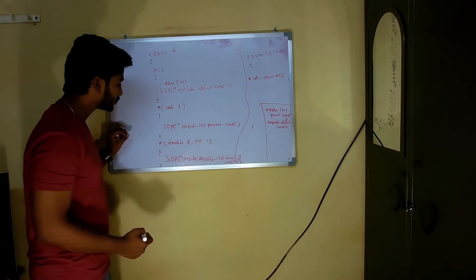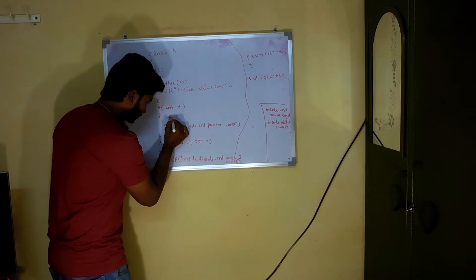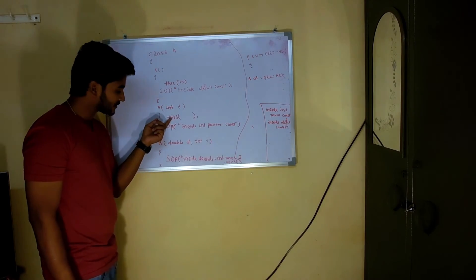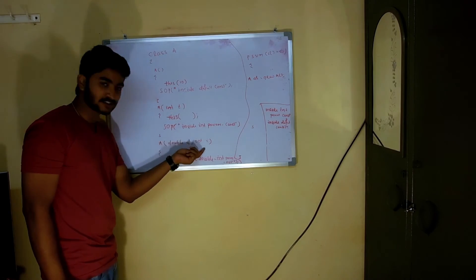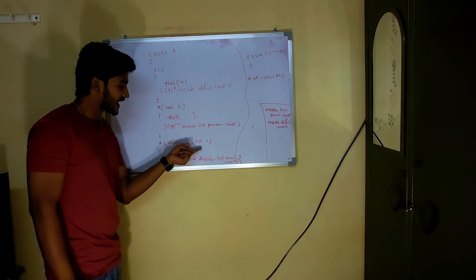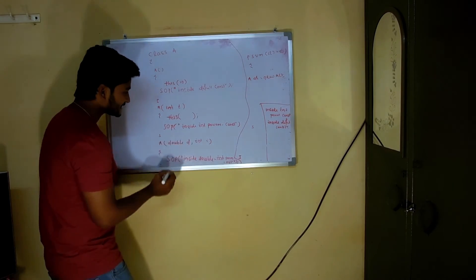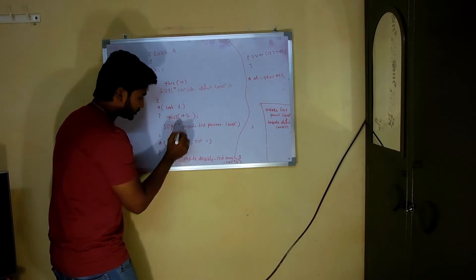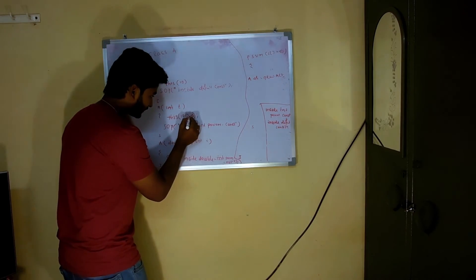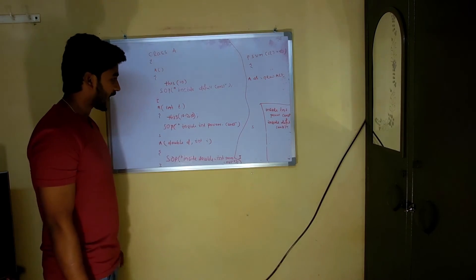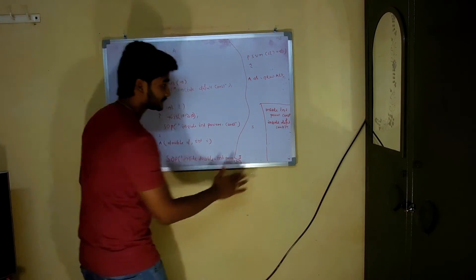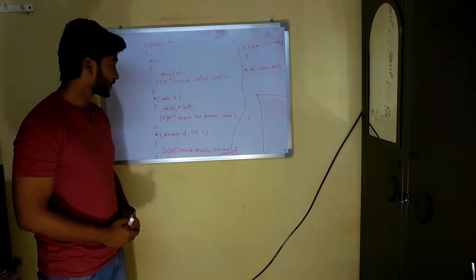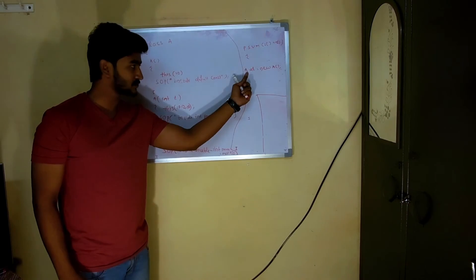Inside the int param constructor, I'll use the 'this' keyword to call the double-int constructor. Since it takes a double and an int, I write 'this(10.12, 10)'. So now the default constructor calls the int param constructor, and the int param constructor calls the double-int param constructor — forming a chain. Let's now trace what the output will be.